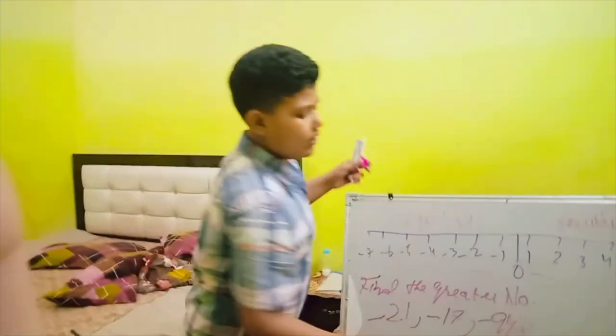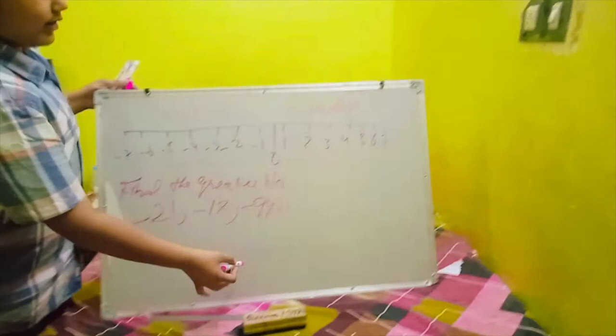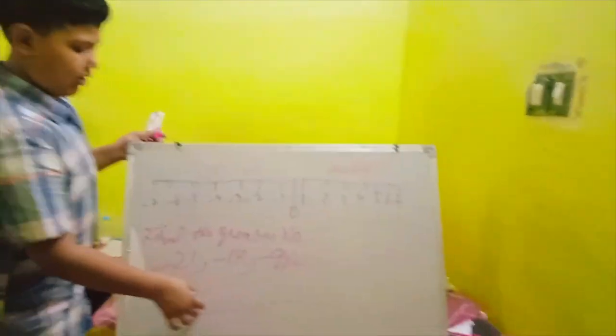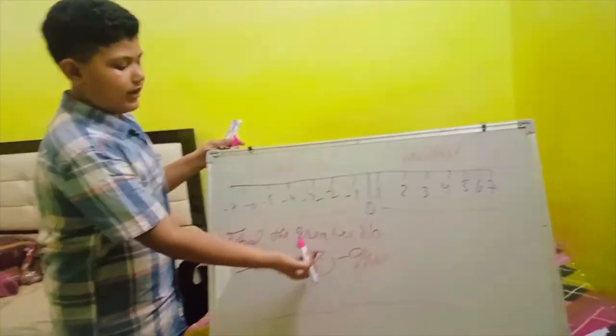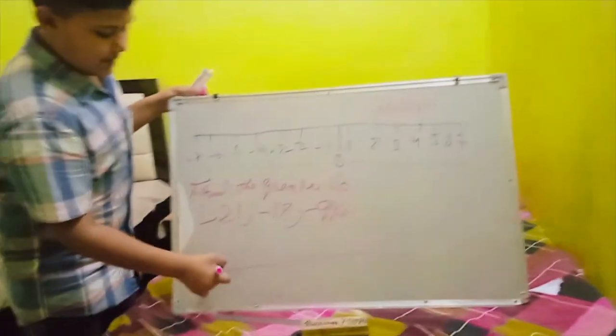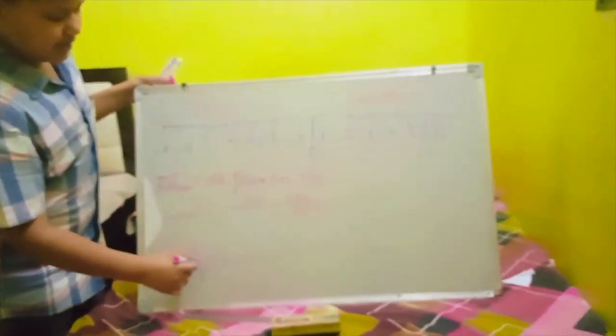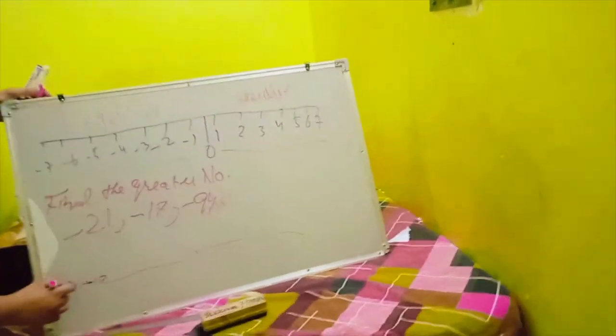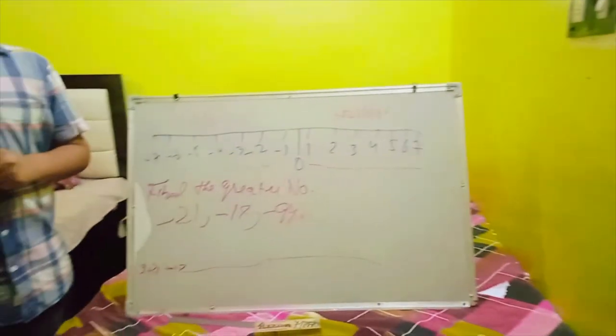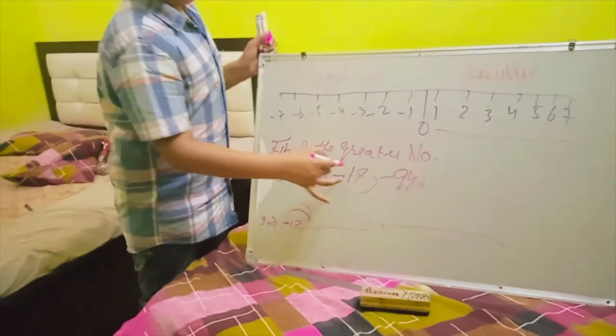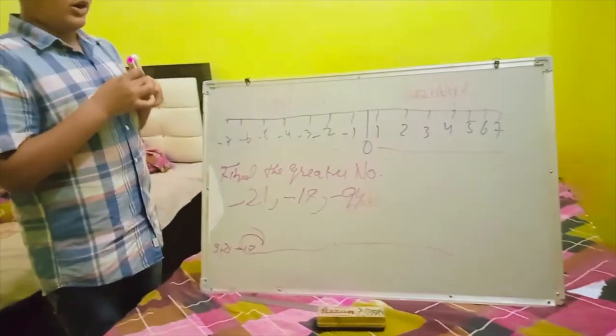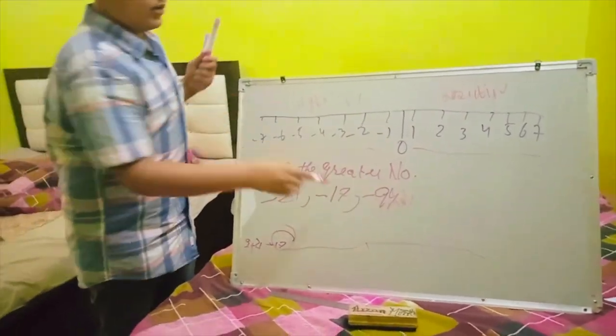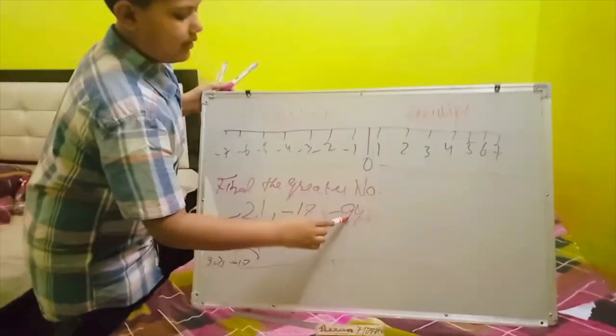So as you can draw a number line in your mind, you have drawn a number line 0. Now draw which number came first: 17 in number line. Number 17 came first, minus 17, then it came minus 21, and then it came minus 94. So which number is closer to 0? 17. So 17 is the right answer, or you can say it's the greater one. So this is right.